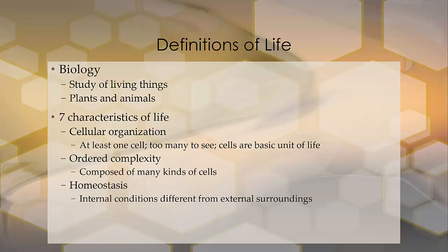Cellular organization means that all living things have at least one cell. Cells are the basic units of life, and we usually have more than enough — too many to see. You can't see them; they're really, really small.